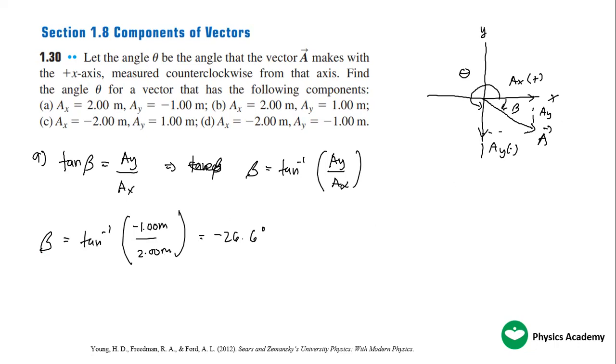Meaning beta is negative 26.6 degrees. Negative means it moves clockwise. That's why it's negative.